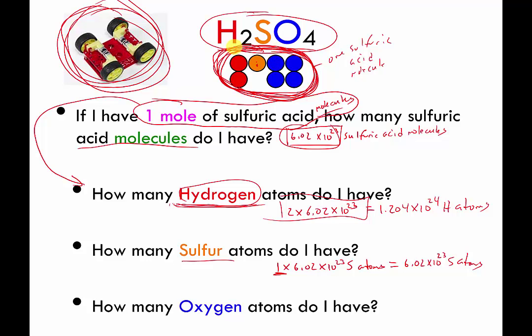And then last but not least, how many oxygen atoms do I have? Well, every time you crack open this molecule, 4 oxygens come tumbling out. So if I have this many sulfuric acid molecules, I have to have 4 times that many, 4 times 6.02 times 10 to the 23 oxygen atoms. So 4 times 6.02 times 10 to the 23 is equal to 2.408 times 10 to the 24 oxygen atoms. So here are the answers to those three questions.